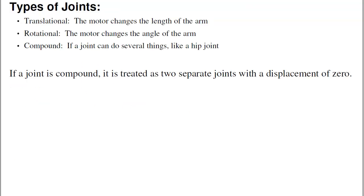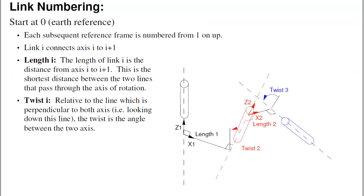There are several types of joints: translational joints and rotational joints. If you have a compound joint that can do several things, the trick is to split it up into separate joints, each one doing just one thing — a translation or a rotation. The net result is you just have translations and rotations for a robot.